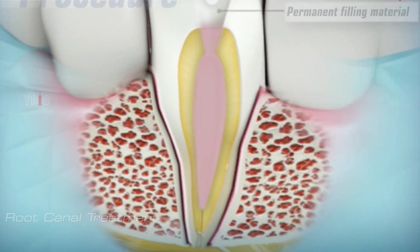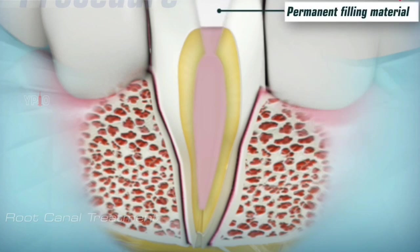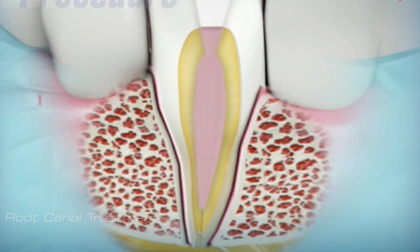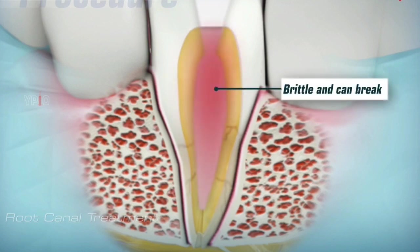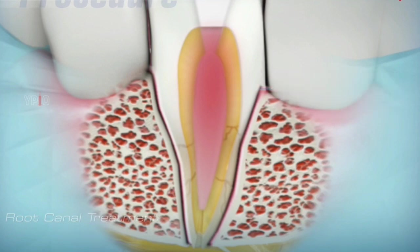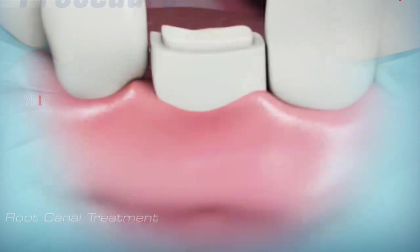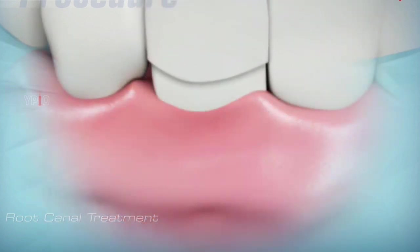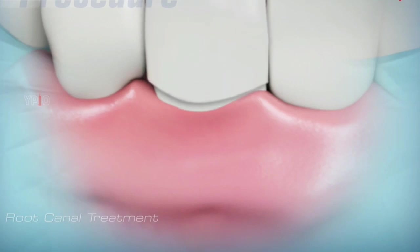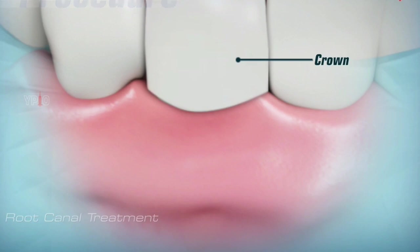The tooth is then restored with a permanent filling material. Root canal treated teeth tend to become brittle and can break because the blood supply to the tooth is removed during the procedure. Therefore, after a root canal treatment, the tooth should be protected with a crown. The purpose of the crown is to prevent the tooth from breaking in the future.